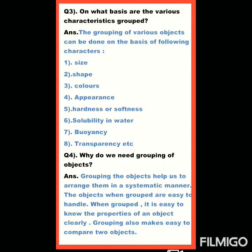Seventh, buoyancy — वो object float करेगा या sink करेगा। And the eighth one is transparency — transparency means transparent material है, translucent material है, या फिर opaque material है।